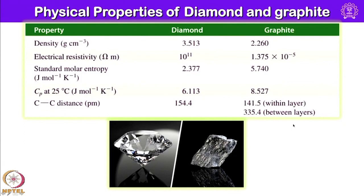Let us look at the difference between graphite and diamond. Density is higher in diamond: 3.513, whereas graphite is 2.26. Electrical resistivity is remarkable in diamond at 10^11, whereas in graphite it is 141.5 within the layer. Standard molar entropy is 2.377 for diamond versus 5.740 J/mol/K for graphite. The carbon-carbon distance in diamond is 154 pm, whereas in graphite it is 141.5 pm within the layer and the interlayer separation is 335 pm.